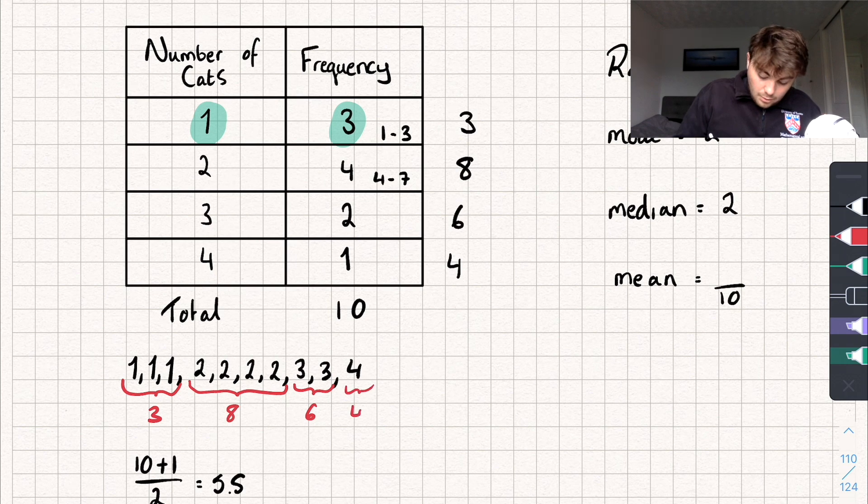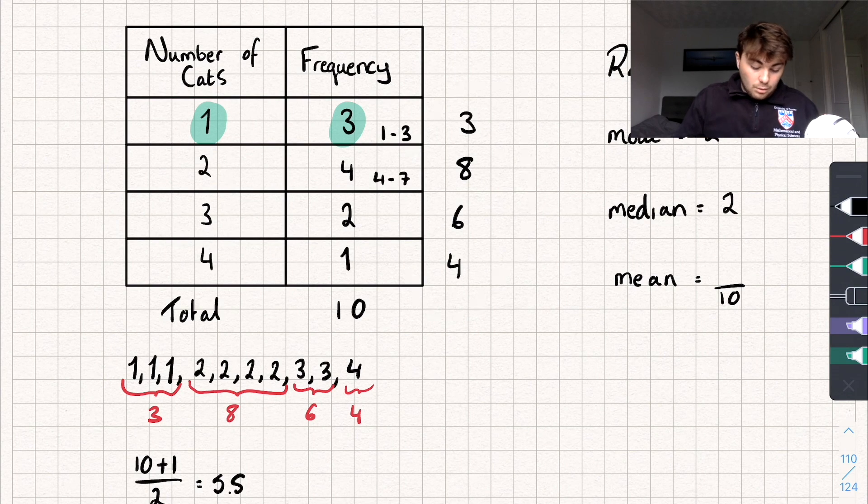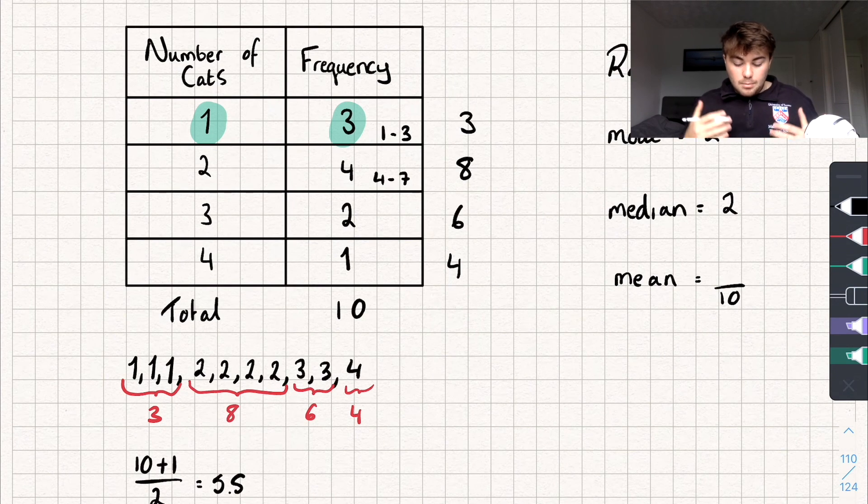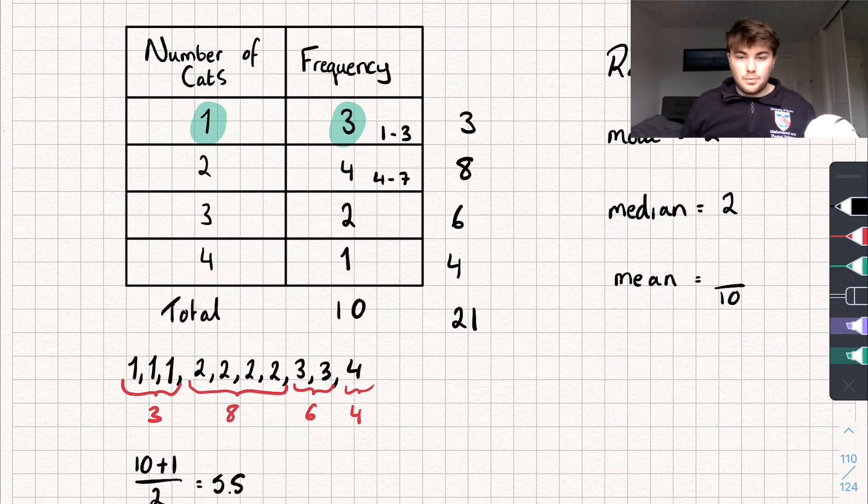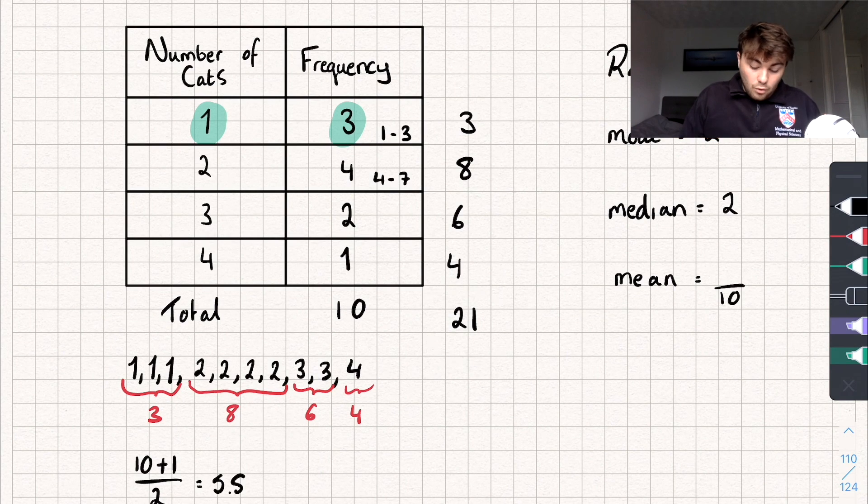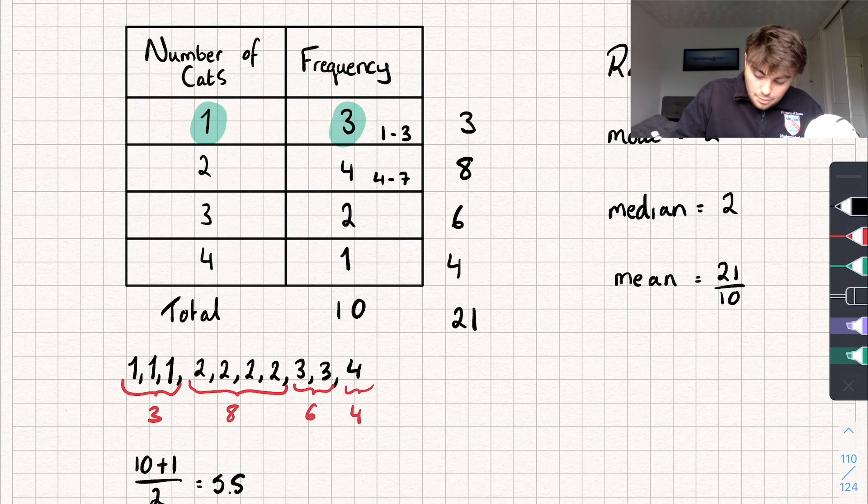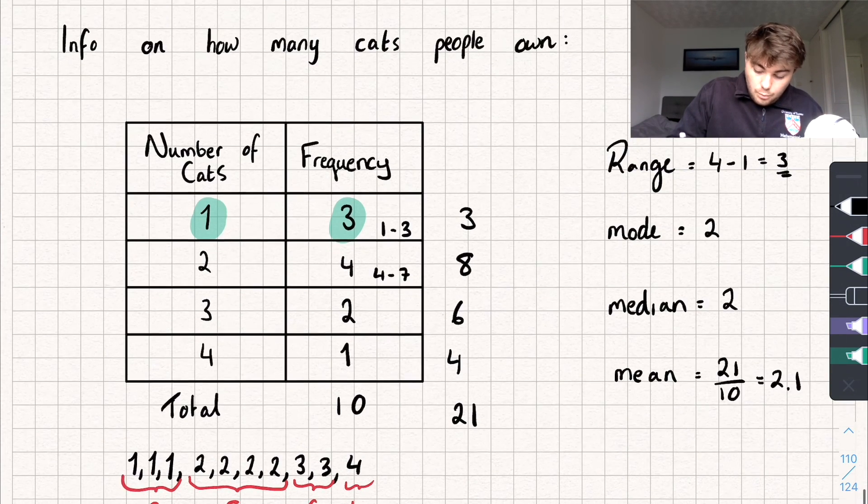And for the final row we're going to do 4 times 1 which is 4. And in our list that's just one four, so it's 4. And then we're going to sum, so add together everything that's in this column here. So 3 plus 8 plus 6 plus 4. And if we do that we're going to get 21. So the mean is the sum of all our data divided by how many we have. Well this is the sum of all of our data. So I'm going to do that column totaled divided by the frequency column totaled. And that gives me 2.1.